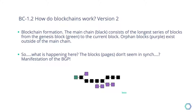Both Africa and South America mined the same block at exactly the same time. The South American block communicates it to the American block, and the African block communicates it to the European block. All of a sudden, the node in Asia needs to pick one — which is the right one?